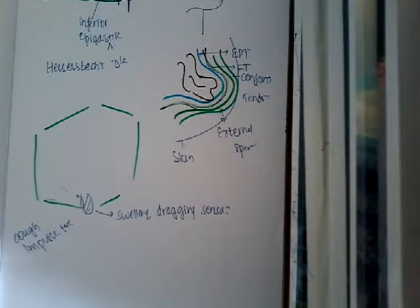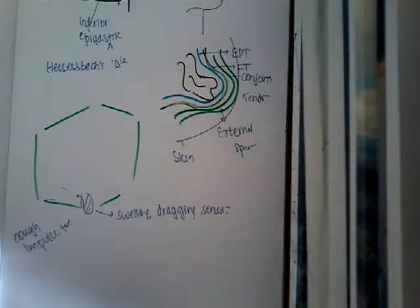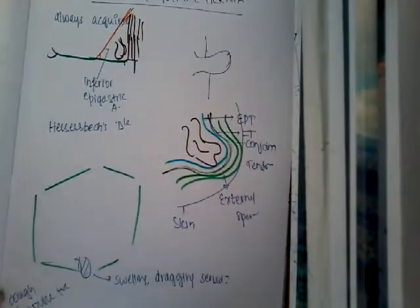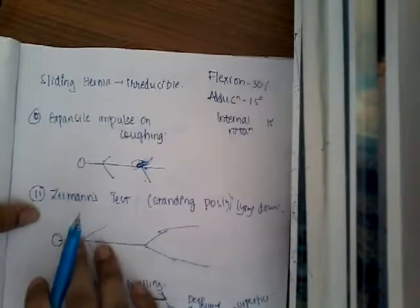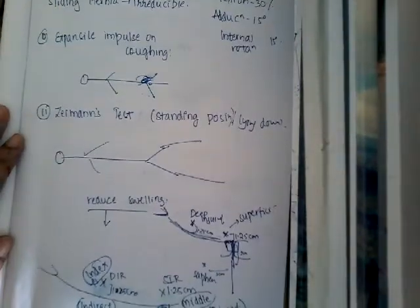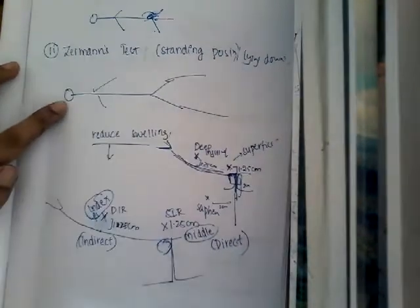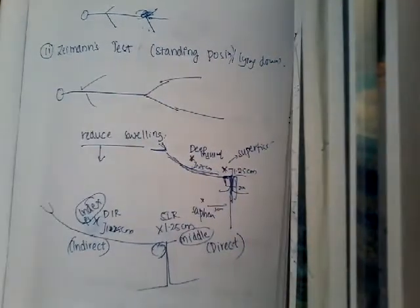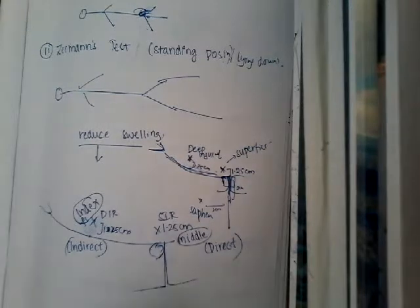The only way to differentiate direct and indirect inguinal hernia is by tests. There are mainly three tests. Let us see the three tests done for direct inguinal hernia. The first test is called Zieman's test.